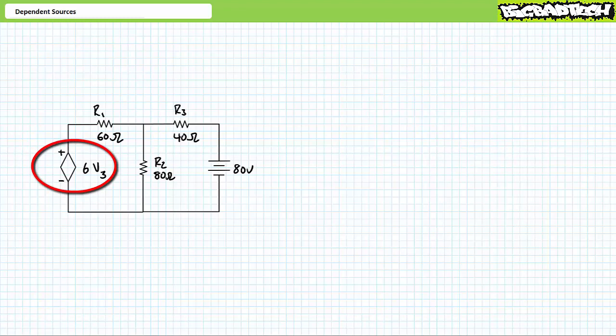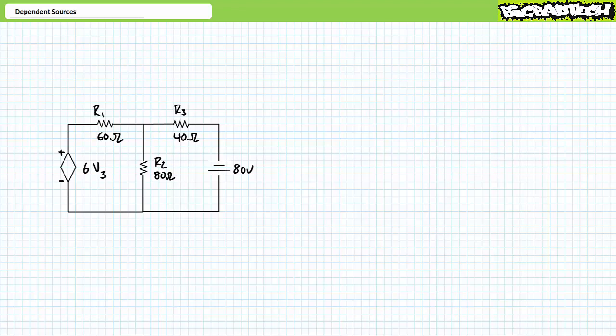Consider a voltage-controlled voltage source where the output of the dependent source is proportional to six times V3, and the controlling signal V3 is inside the same circuit. This is a chicken-or-the-egg type quandary that will have you chasing your tail if you approach it using traditional circuit analysis techniques — the output depends on V3, which depends on the output, and so on. For this reason, circuits incorporating dependent sources often require special tactics, notably mesh and nodal analysis, or for those in the modern era, circuit simulation software. We'll examine this in later lectures.